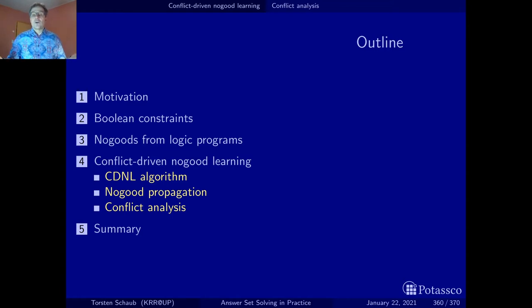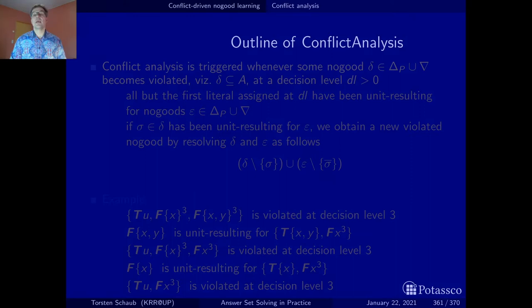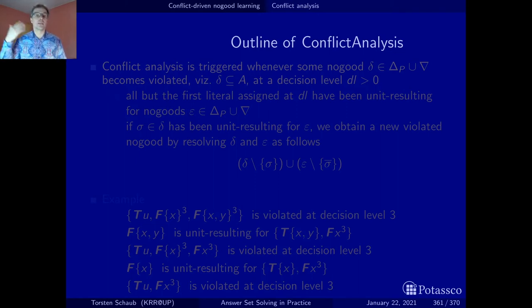The question is how is this transformation happening and how is the algorithm doing that? As before, we first outline our algorithm, then give the algorithm, look at an example, and then summarize a few observations at the end of this section.